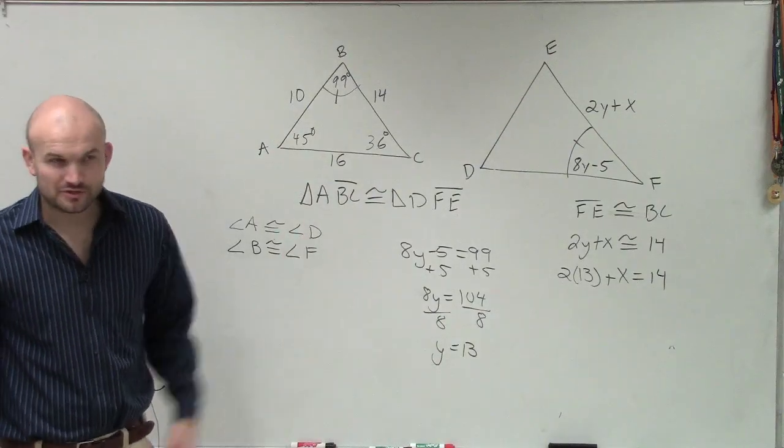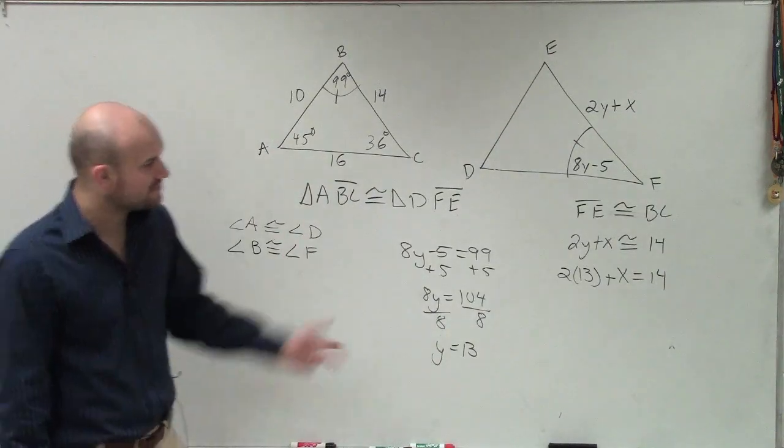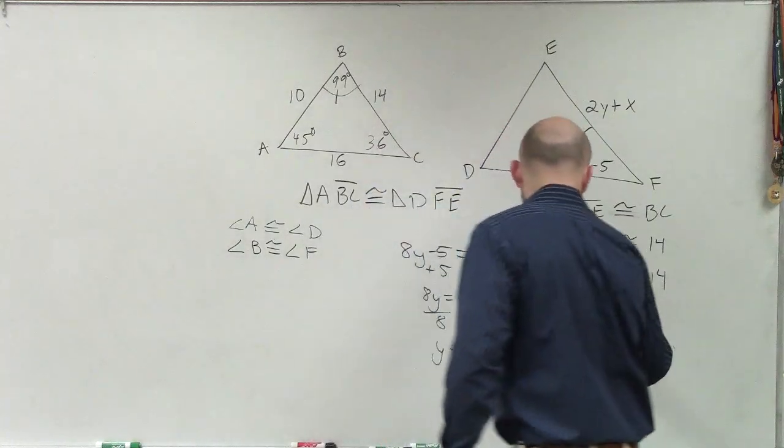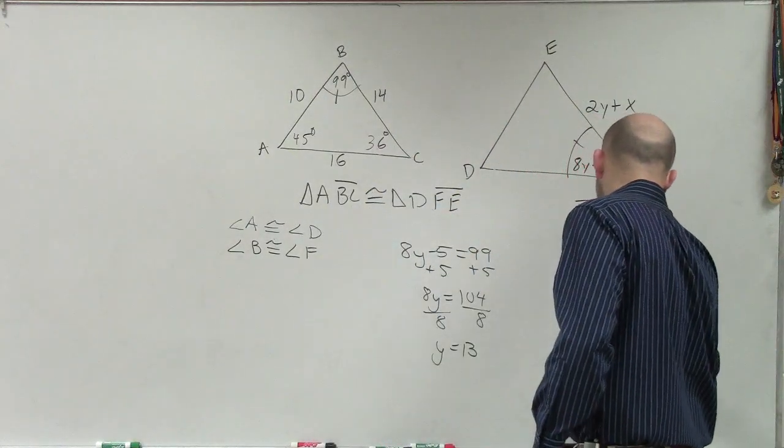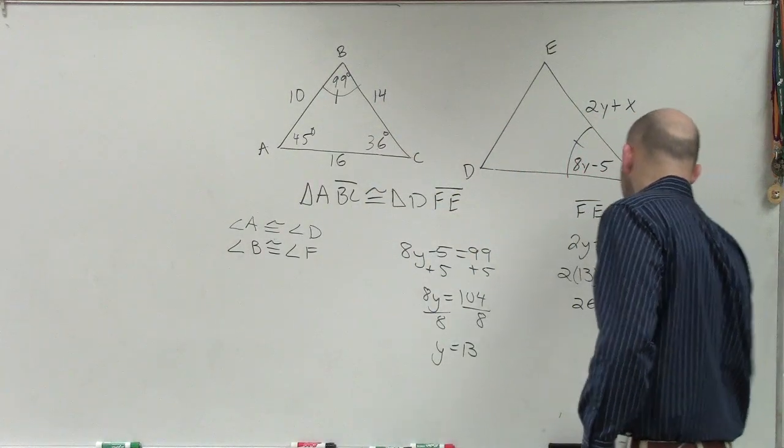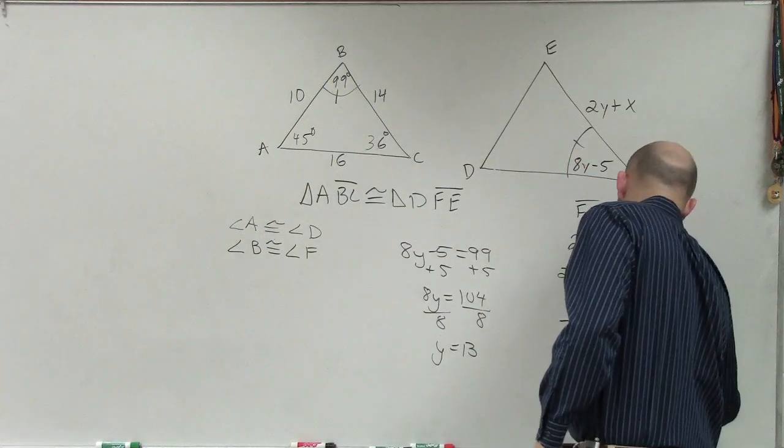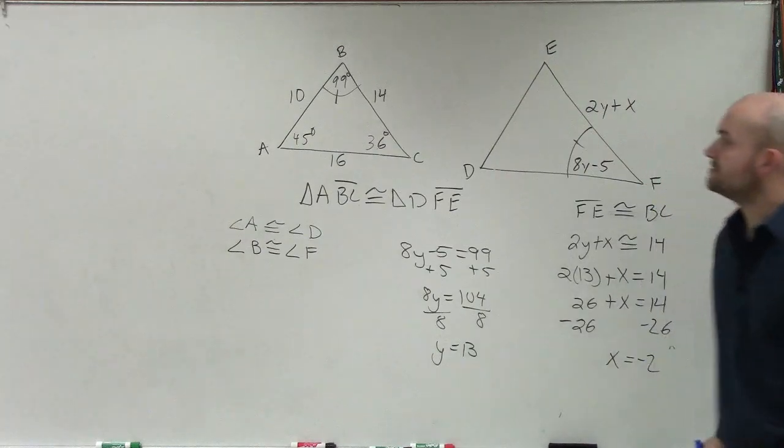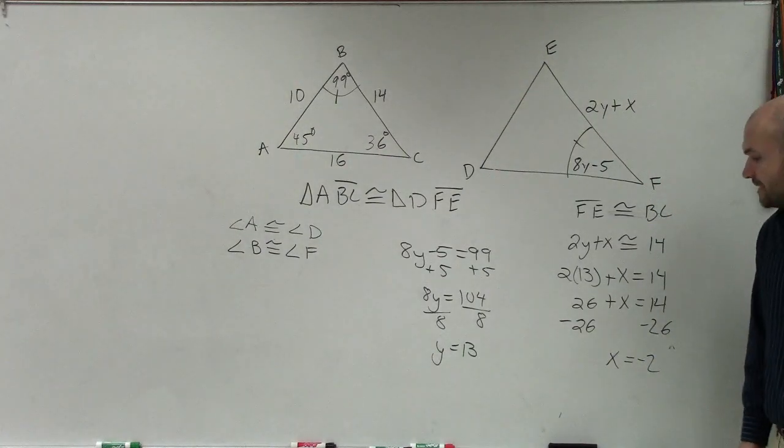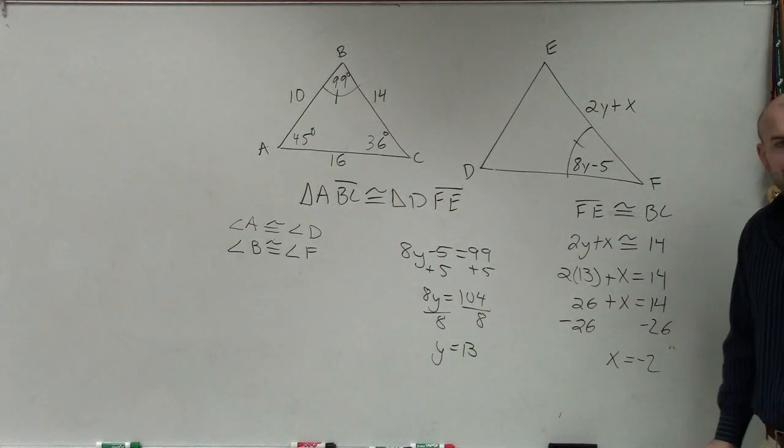Now, I'm just going to solve them. I'm not going to use congruency. I'm just going to use the equal sign to solve. So 2 times 13 is going to be 26 plus X equals 14 minus 26 minus 26. X equals negative 12. So that means the value of X is going to be negative 12.